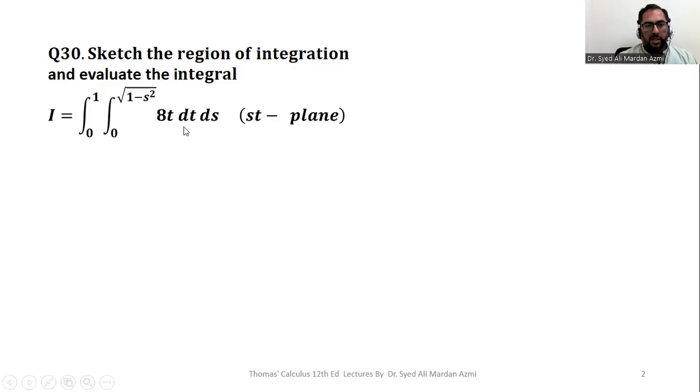Statement of problem is 8t dt ds. We have to integrate 8t for the limits of t 0 to square root of 1 minus s squared and the limit of s are 0 to 1. Here we have st plane means our horizontal axis will be s axis and our vertical axis will be t axis.